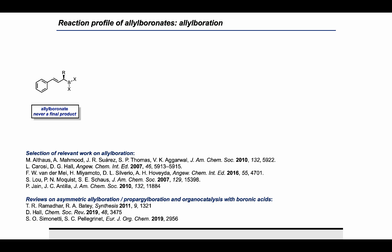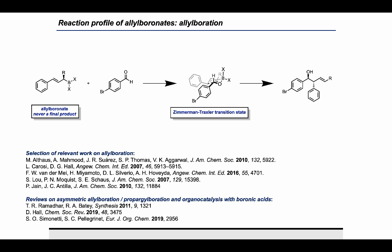One of the most common reactions that alloboronates engage in is called alloboration. An alloboronate can react with an aldehyde in a six-membered transition state called a Zimmermann-Traxler transition state, and it will give a homoallylic alcohol. The Zimmermann-Traxler transition state is very reliable and even predictable, meaning you can quite accurately predict the stereochemical outcome of an alloboration reaction just by looking at the reactants.